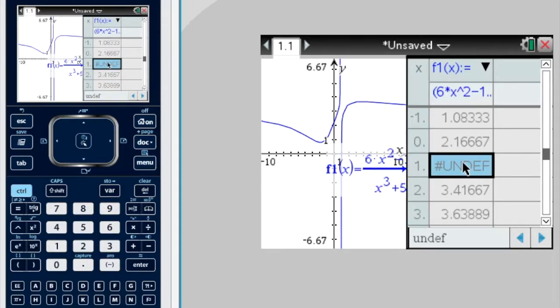Here, we can see we are undefined at x equals 1. So what does that mean? That means there must be a vertical asymptote at x equals 1.